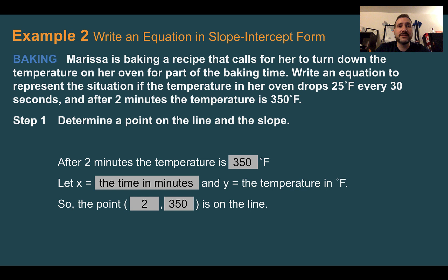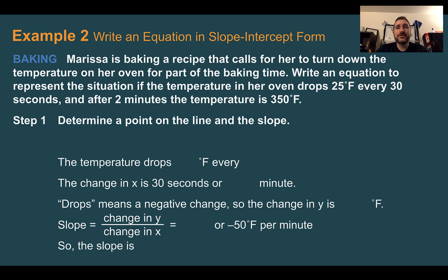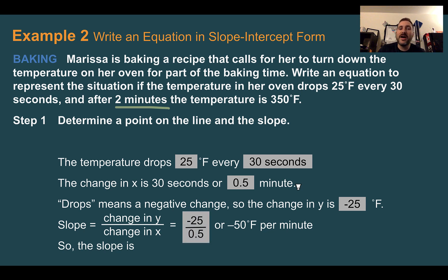If x represents the time in minutes and y is the temperature in Fahrenheit, that would mean after 2 minutes the temperature is at 350 degrees. So the point (2, 350) would be on the line. We also know the temperature drops 25 degrees every 30 seconds. We need to change one of those units into the other so we can relate them. The change in x is 30 seconds or half of a minute, so let's use 0.5 minutes instead of 30 seconds. The word drops also indicates a negative change. So the change in y is going to be negative 25. Now to figure out our slope we do the change in y divided by the change in x. So it went down 25, negative 25, divided by it took half a minute, so 0.5. Negative 25 divided by 0.5 gives us negative 50. So the slope is negative 50.